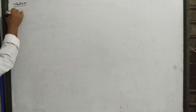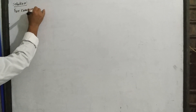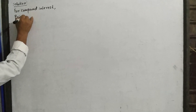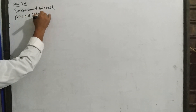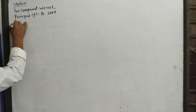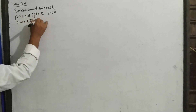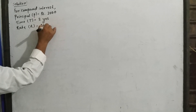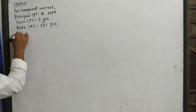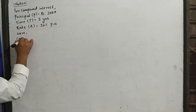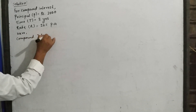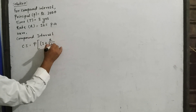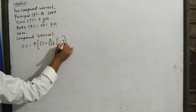Solution for compound interest: Principal P is equal to rupees 2000, time T is equal to 3 years, and rate of interest R is equal to 10% per annum. The compound interest formula is CI = P[(1 + R/100)^T − 1].